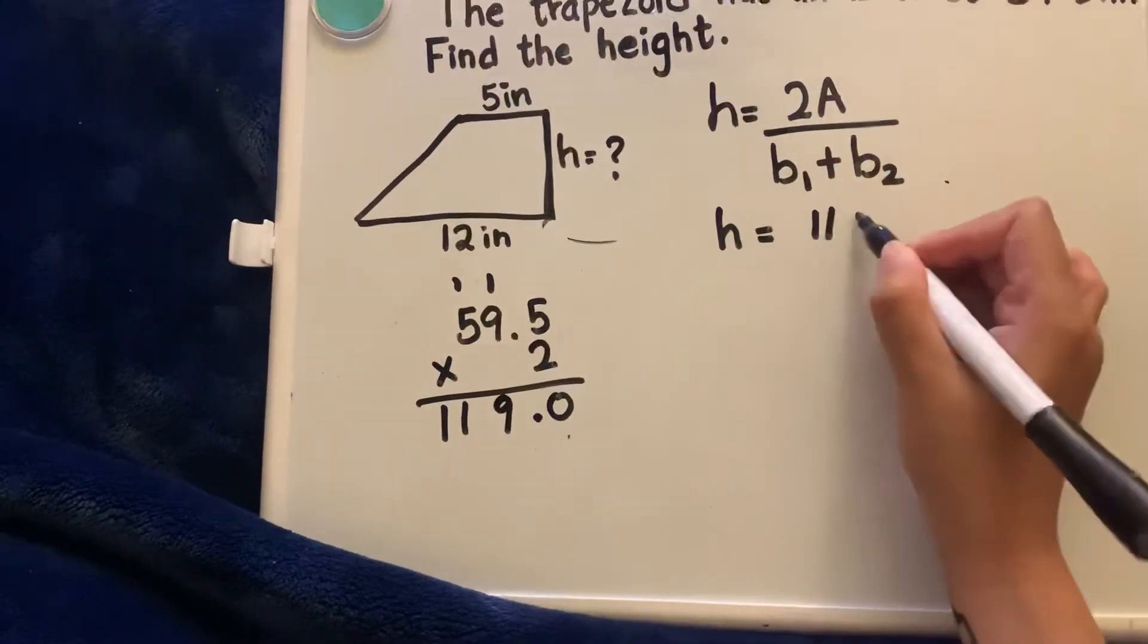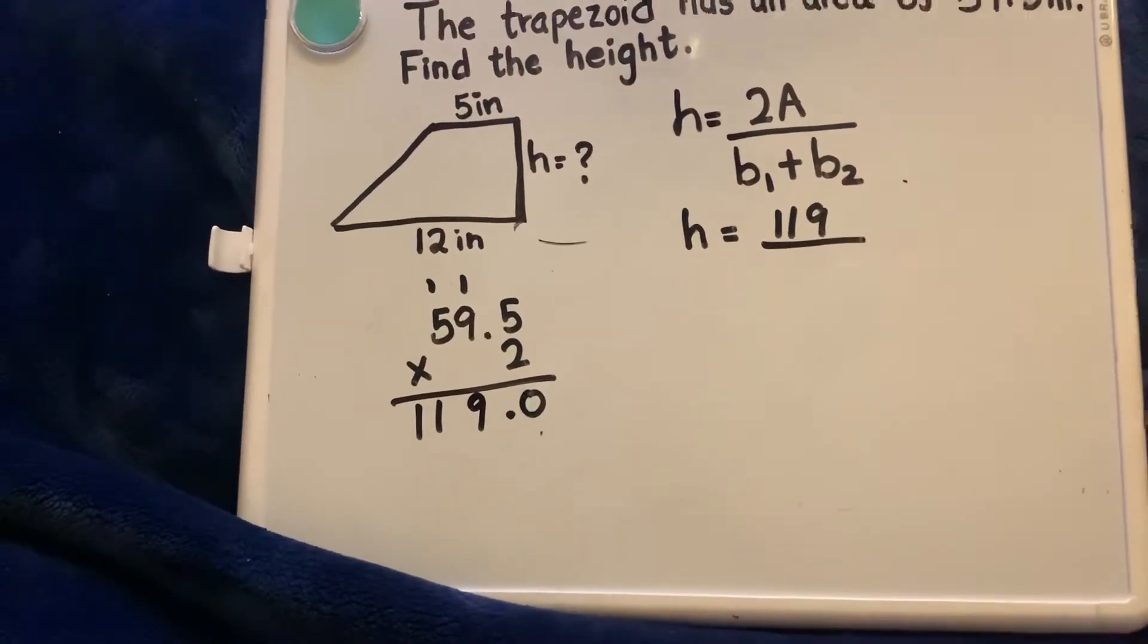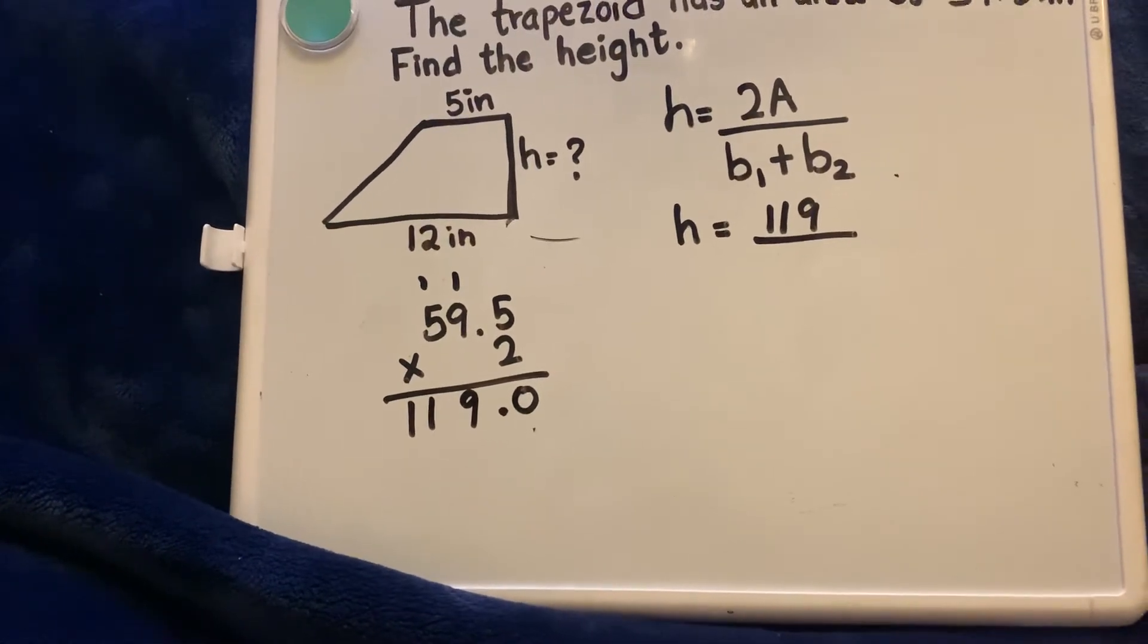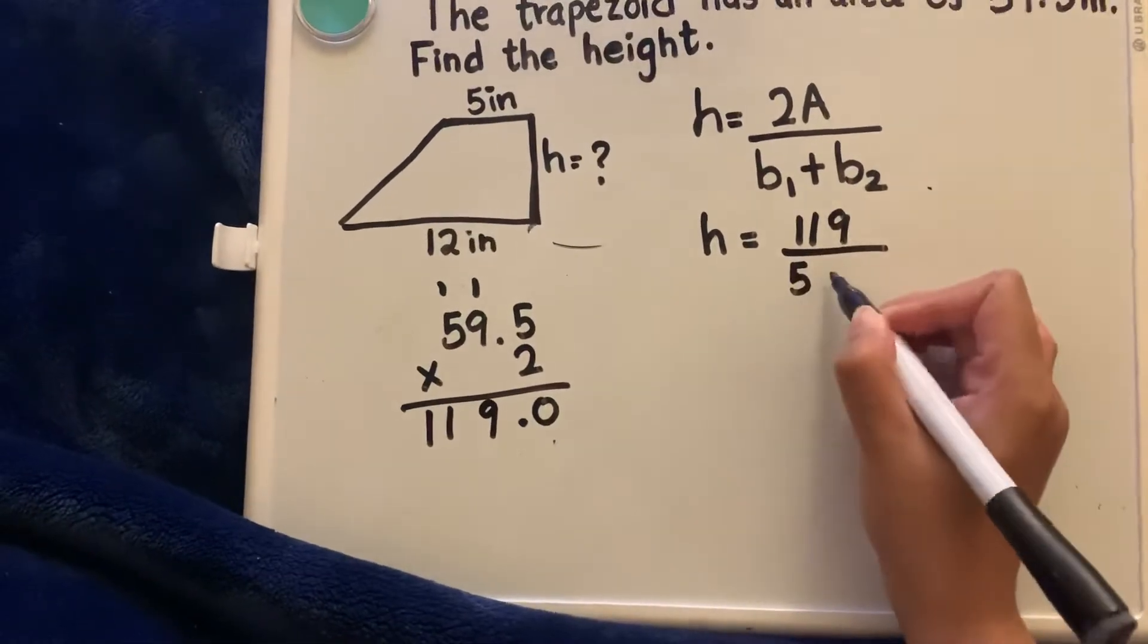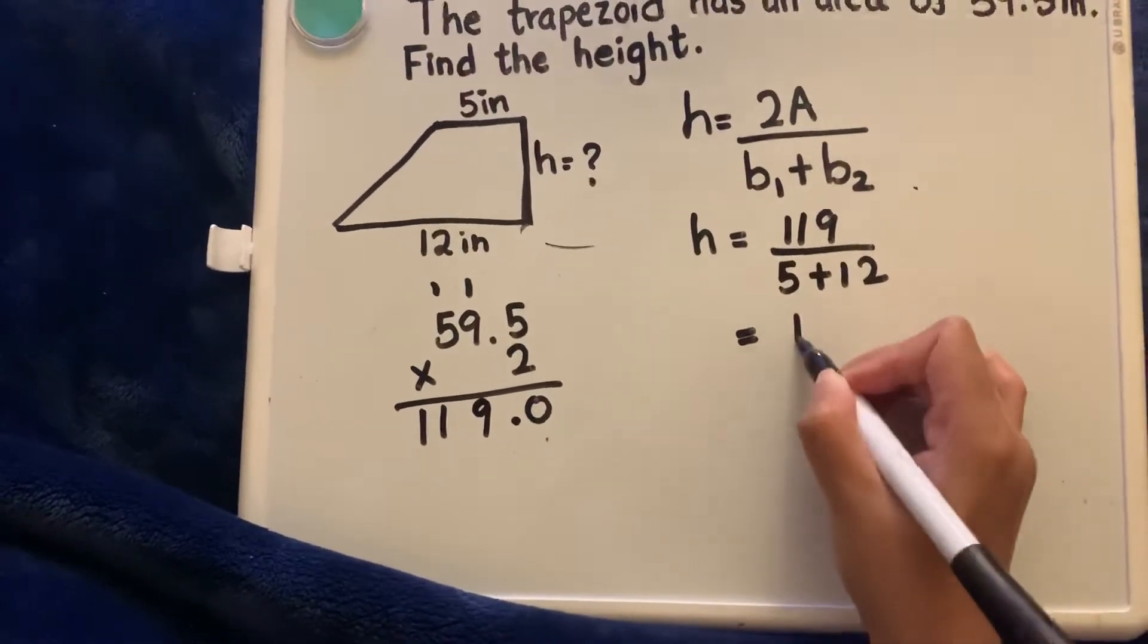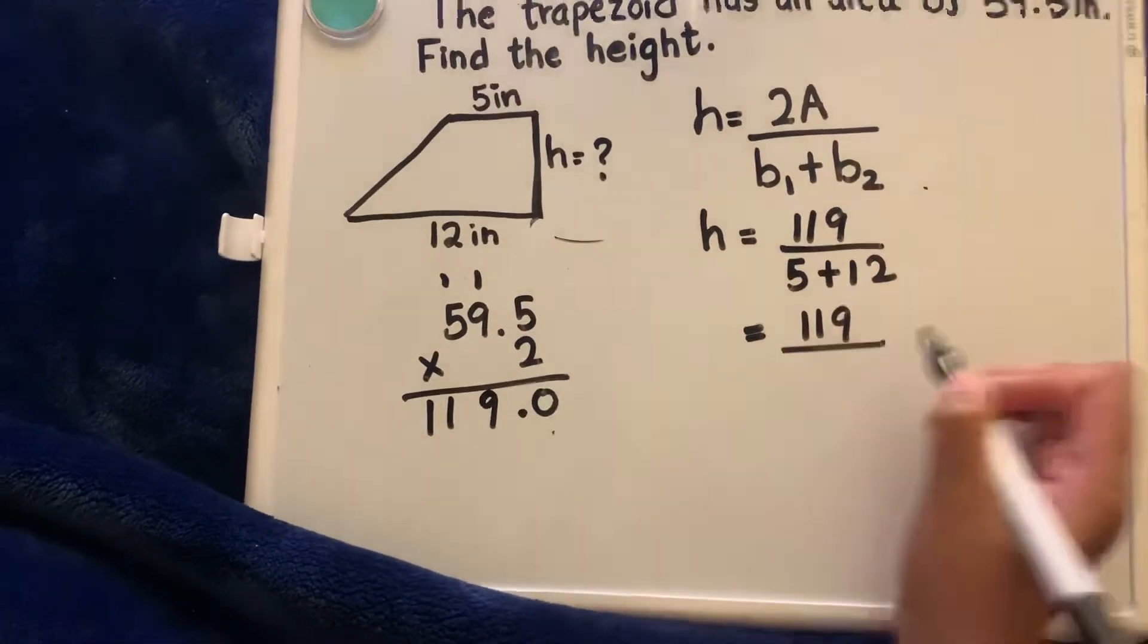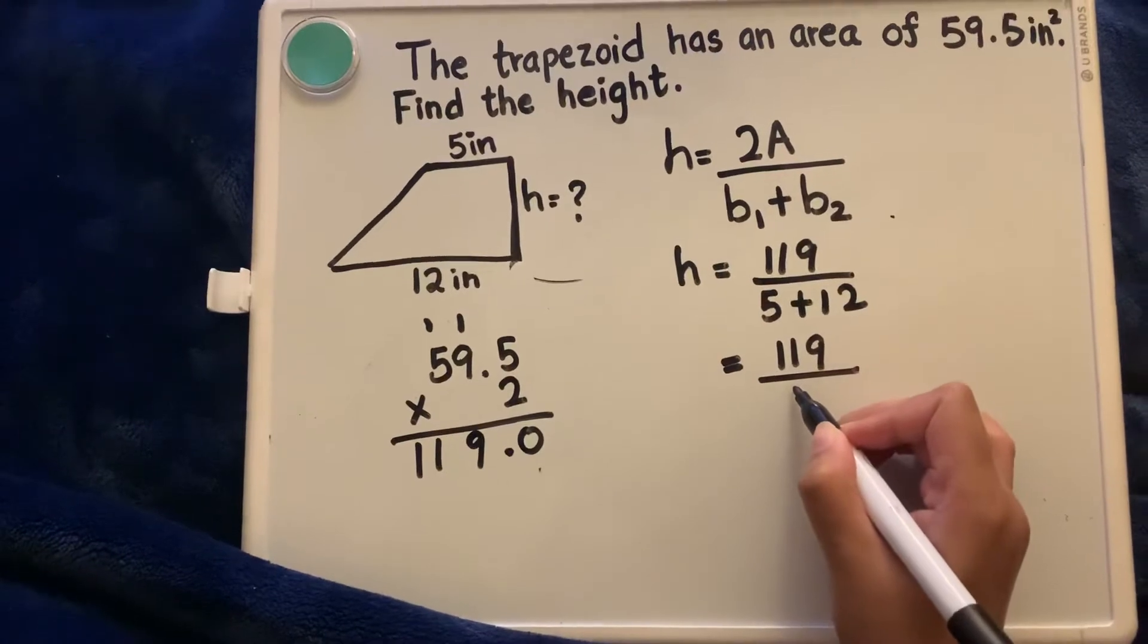So we get 119 divided by base 1 plus base 2, which is 5 plus 12. So I am going to add them together. 5 plus 12 gives me 17.